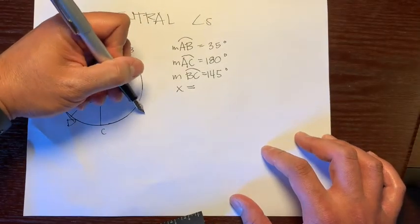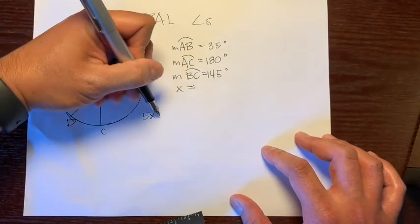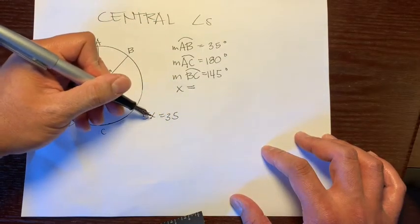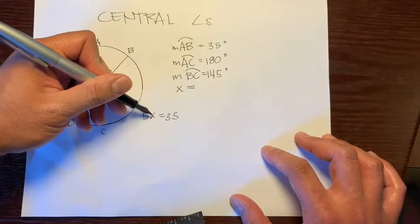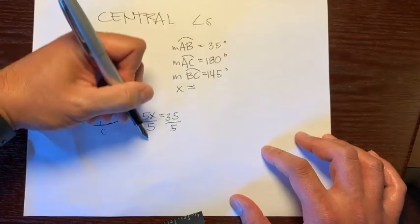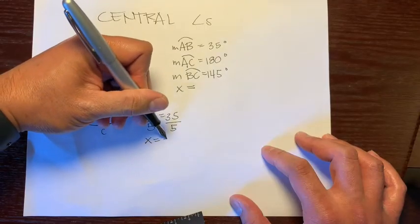So let's do the work over here. I'll write 5x equals 35. And how do we get x by itself? This is 5 times x, the opposite of multiplication is division. So we'll divide both sides by 5. So x equals 7.